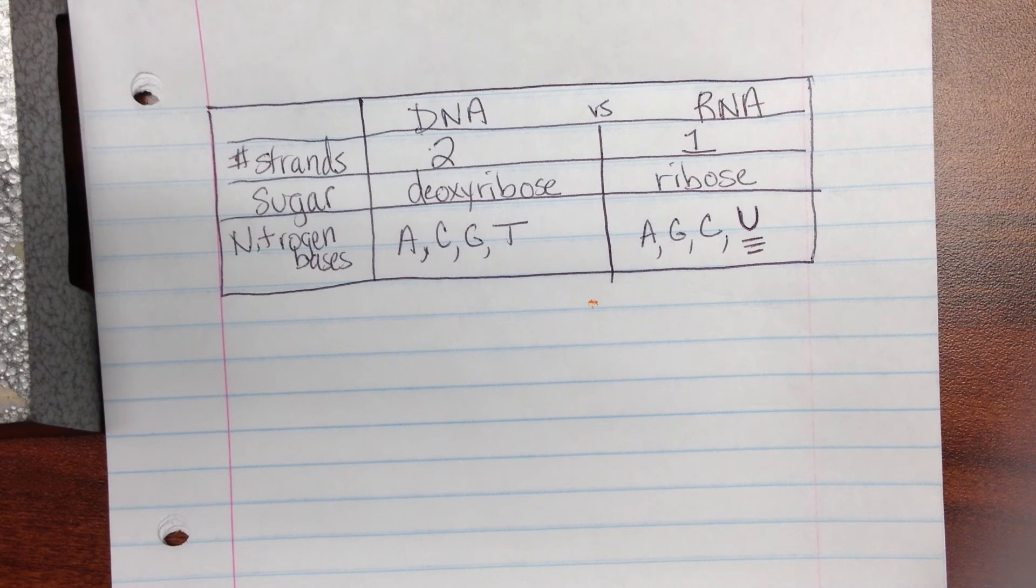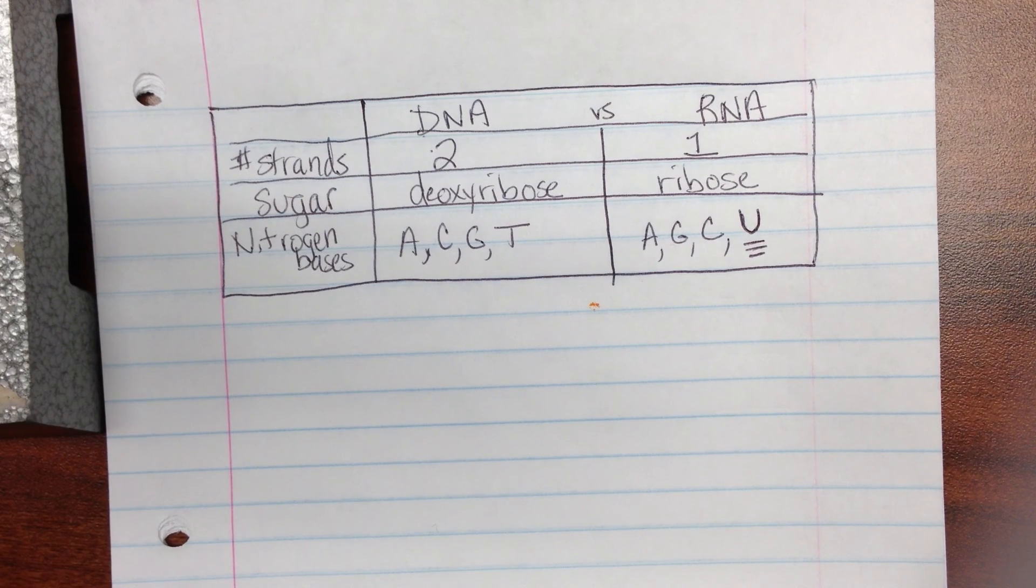All right, so that is your basic information for the genetic code and some of the words that we'll need. We will use all these words and put it all together in the process called protein synthesis that we'll learn more about in another episode. Thank you so much.